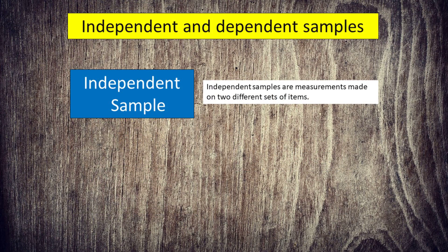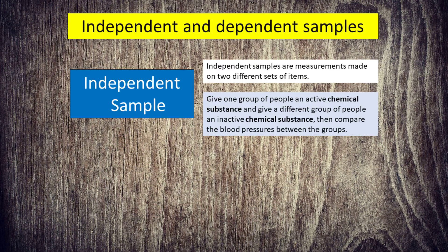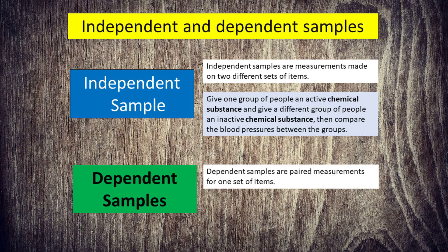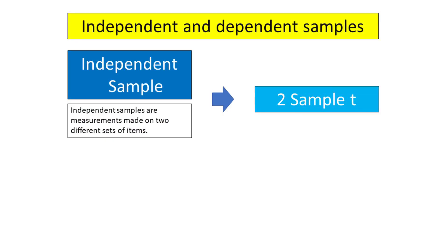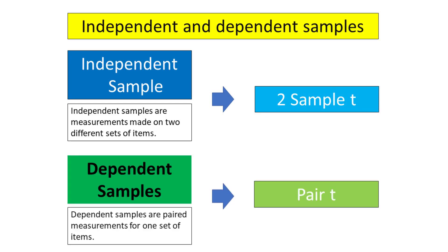Independent samples are measurements made on two different sets of items. For example, give one group of people an active chemical substance and give a different group of people an inactive chemical substance, then compare the blood pressures between the groups. Furthermore, dependent samples are paired measurements for one set of items. For example, sample the blood pressures of the same people before and after they receive a dose. 2-sample t-test is used when the data of two samples are statistically independent. While the paired t-test is used when data is in the form of dependent samples.